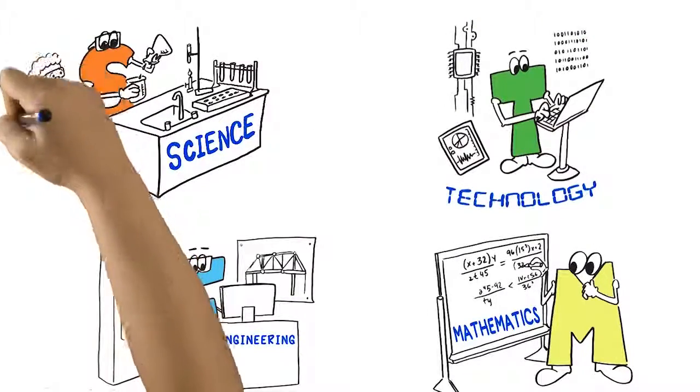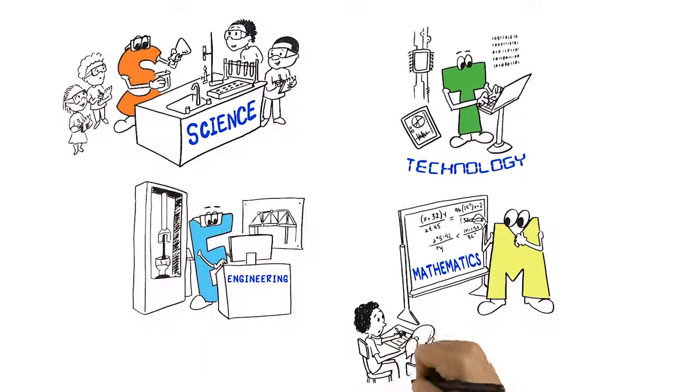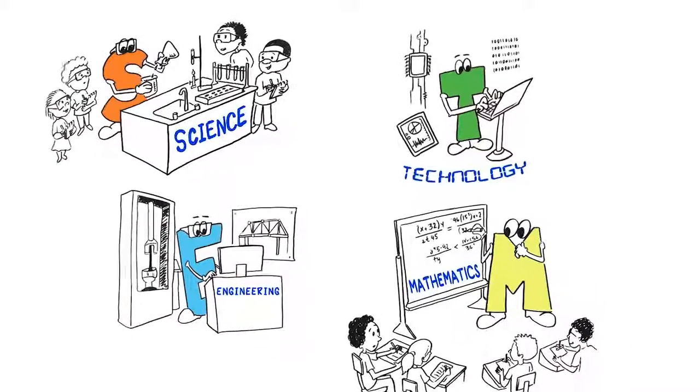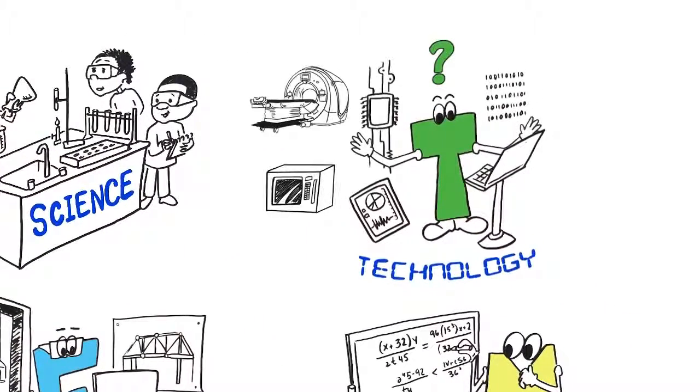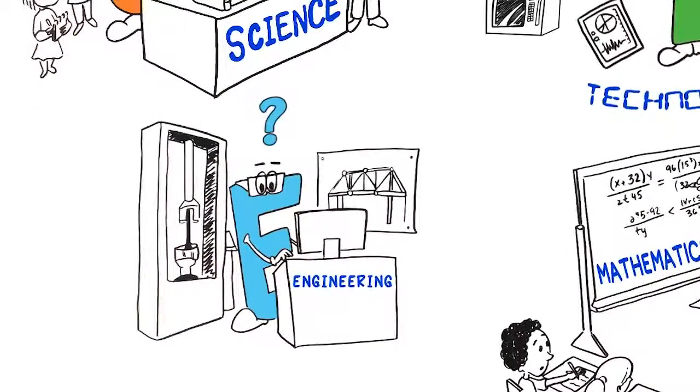In kindergarten through 12th grade in the United States, most STEM teaching and learning focuses on science or mathematics. Comparatively little attention has been paid to the T, the products and systems that meet human needs, and E, the creative process used to design these things.